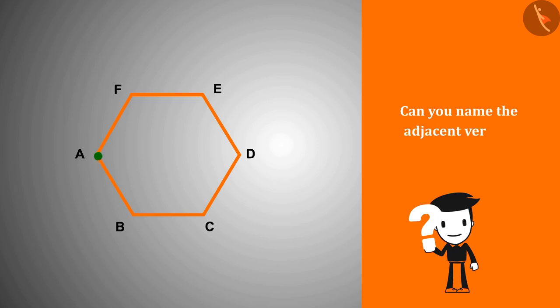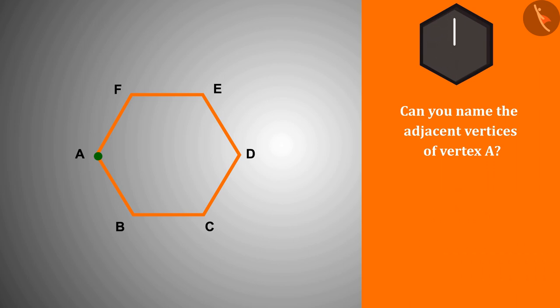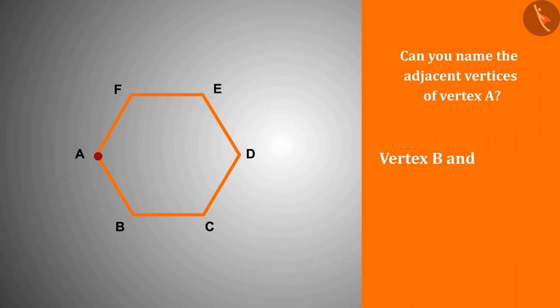Now if we take this polygon and name it in this way, can you name the adjacent vertices of vertex A? Well done! The vertex B and vertex F are adjacent to the vertex A. Now connect the vertex A with the vertices which are not adjacent to it.